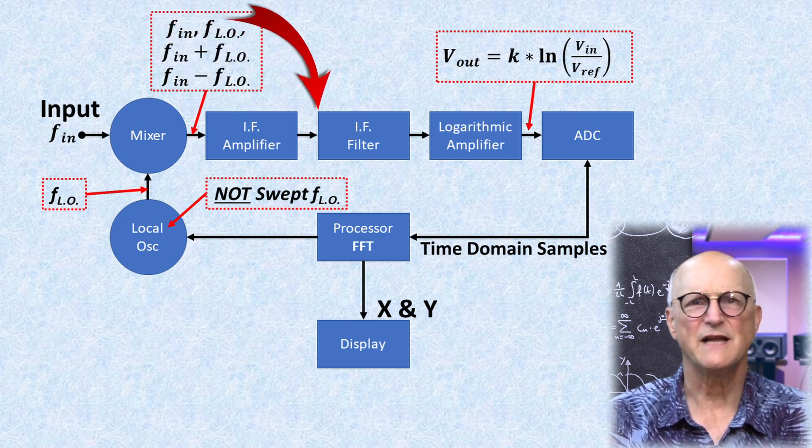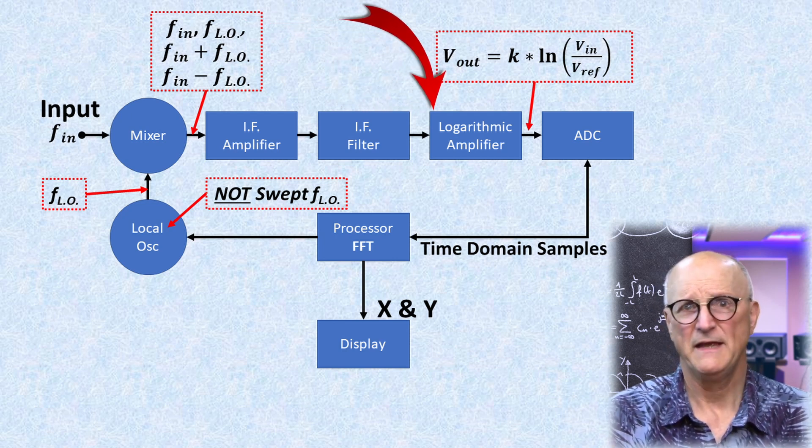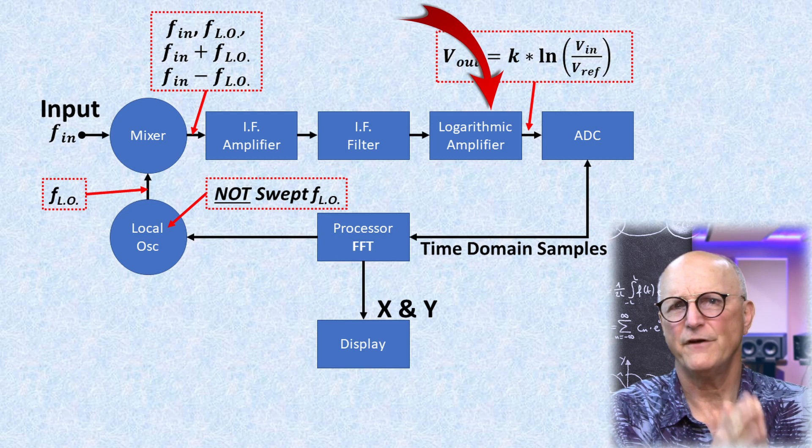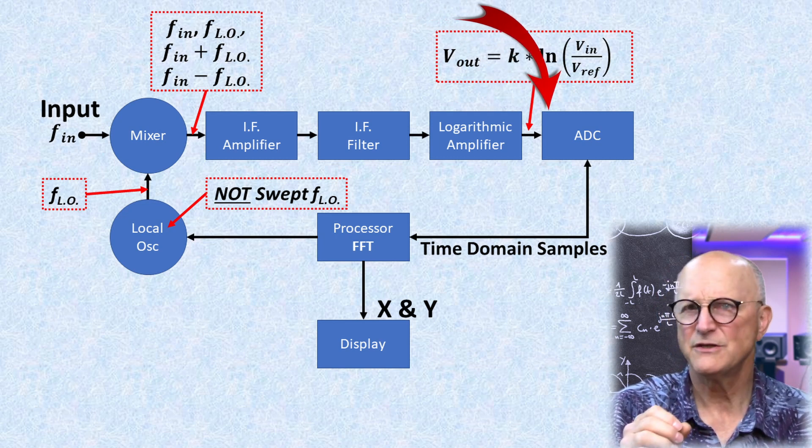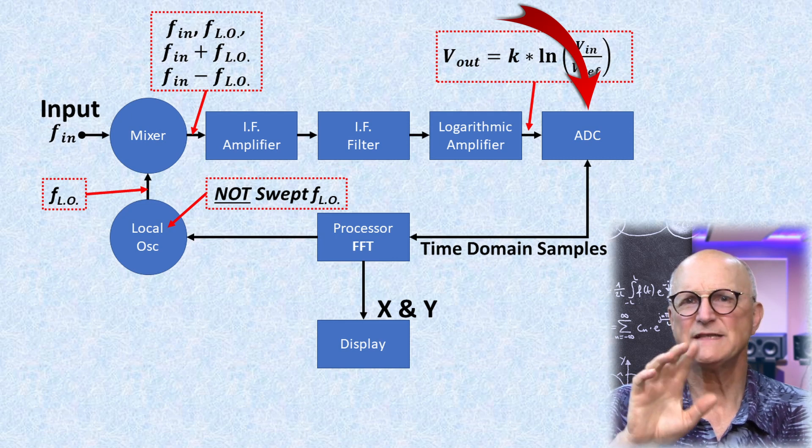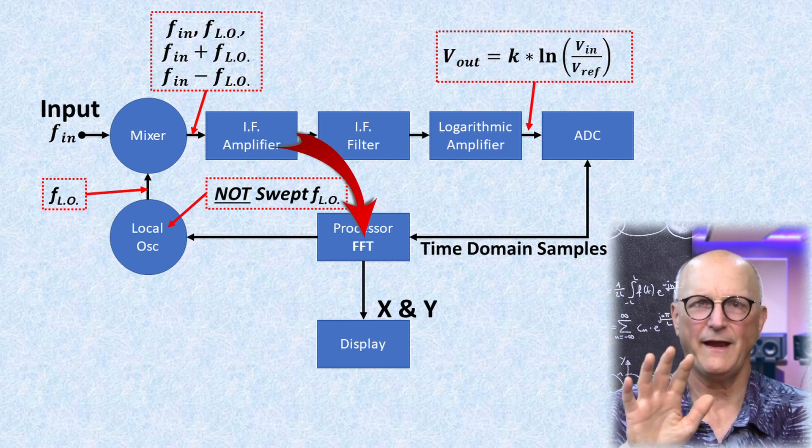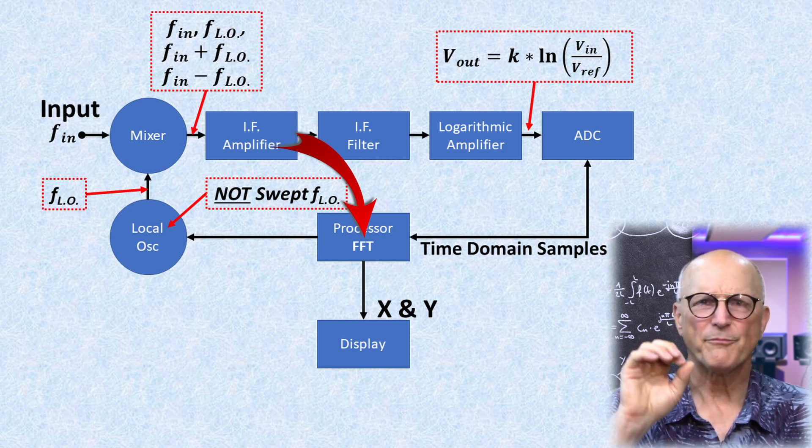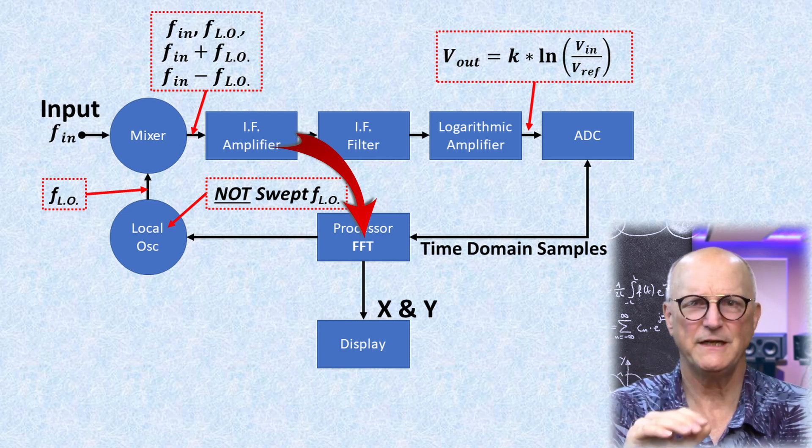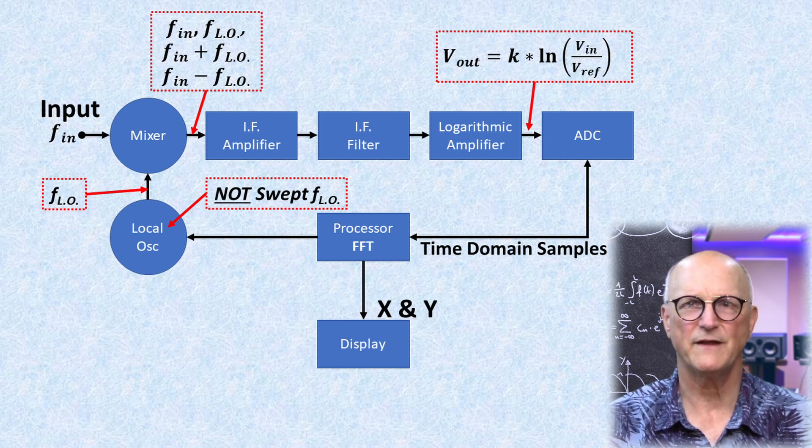The output of the heterodyne front end goes to an analog-to-digital converter, and with this hybrid approach, the IF is now sampled in the same fashion as they do for a Fourier analyzer. The processor does an FFT, and the display is then updated with the results of the FFT.